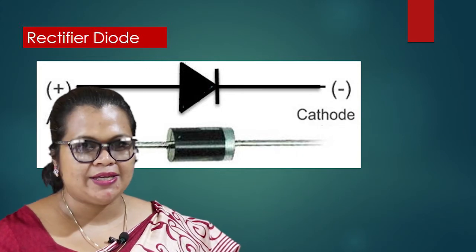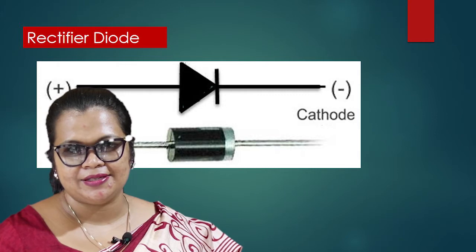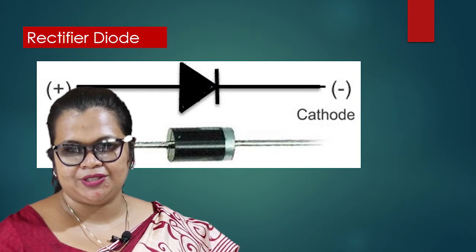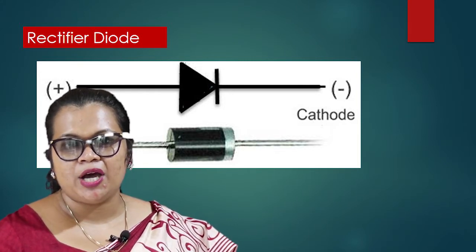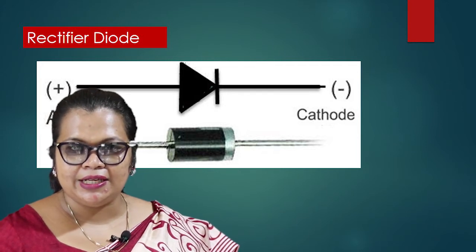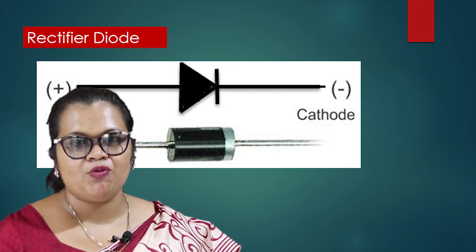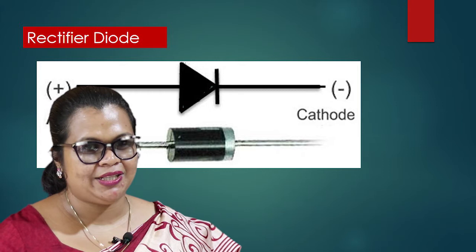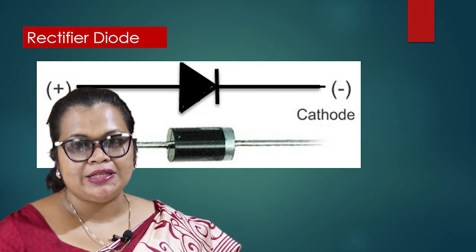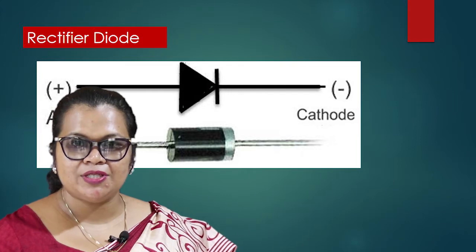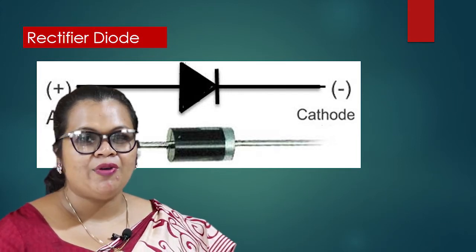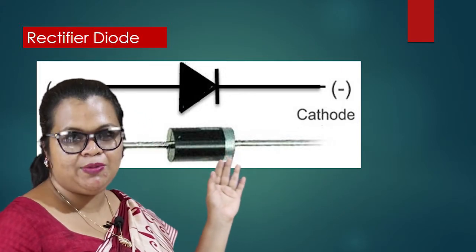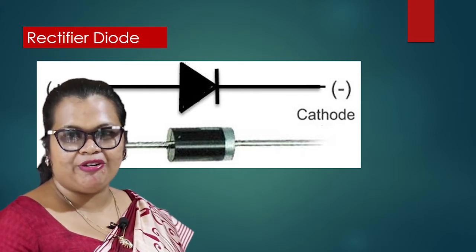Under electronic appliances, we are going to learn about diodes. There are different types of diodes. Now we are going to learn about the rectifier diode. These diodes are very special because they allow current flow only along one direction. A diode has two terminals: a positive terminal and a negative terminal. Current flows from the positive terminal to the negative terminal. When connecting a diode to a circuit, we always have to connect the positive terminal of the diode to the positive terminal of the external cell.